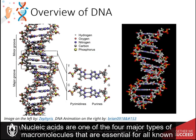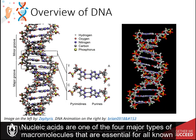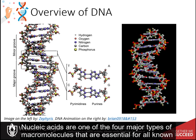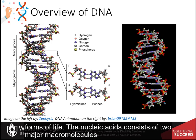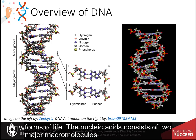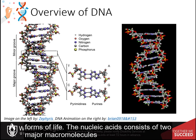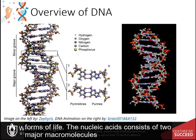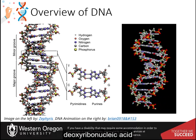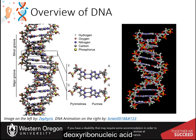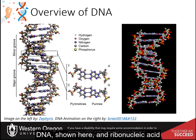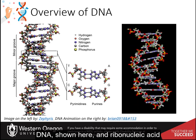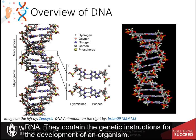Nucleic acids are one of the four major types of macromolecules that are central for all known forms of life. The nucleic acids consist of two major macromolecules: deoxyribonucleic acid, DNA, shown here, and ribonucleic acid, RNA.